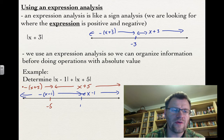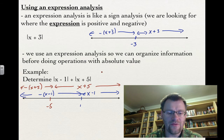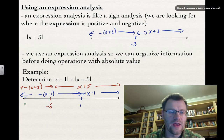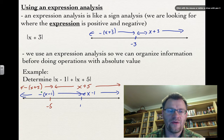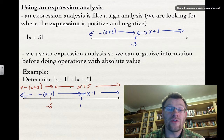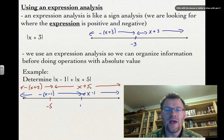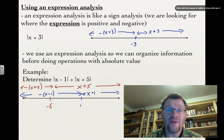This divides into three intervals. From negative infinity to negative 5, both expressions are negative: negative (x plus 5) and negative (x minus 1). Between negative 5 and 1, we have positive (x plus 5) but negative (x minus 1). And anything to the right of 1 gives positive (x plus 5) and positive (x minus 1).